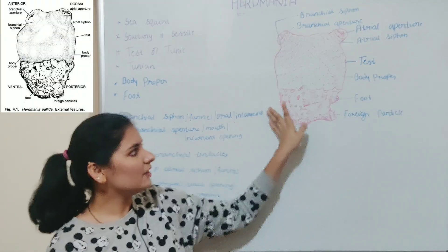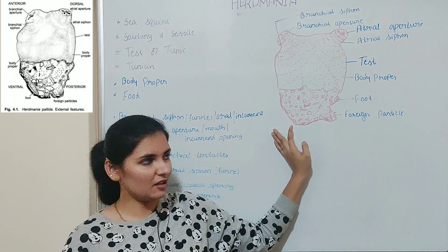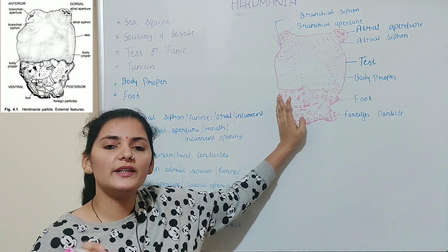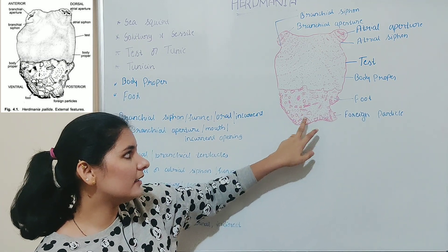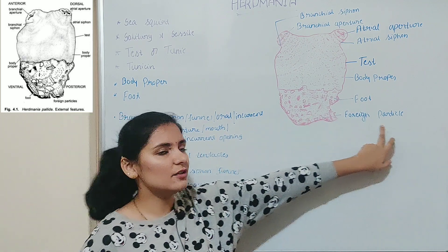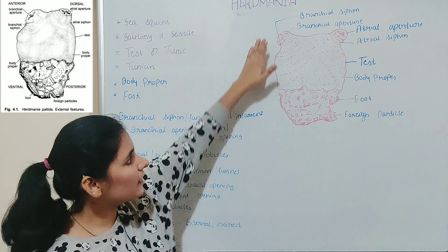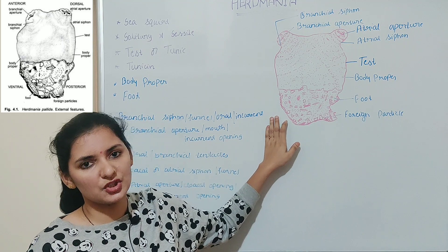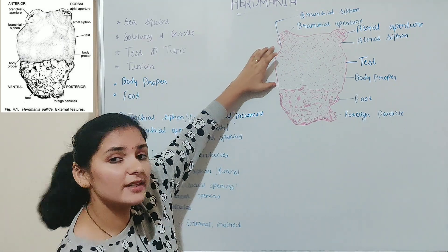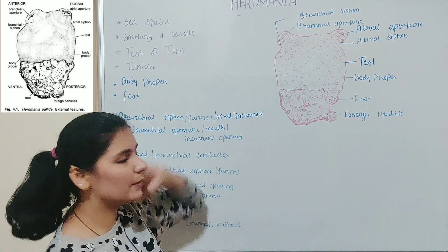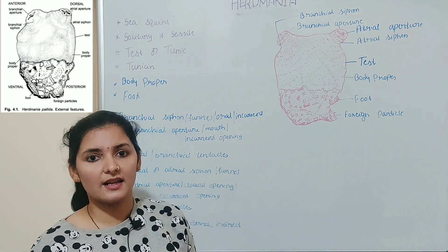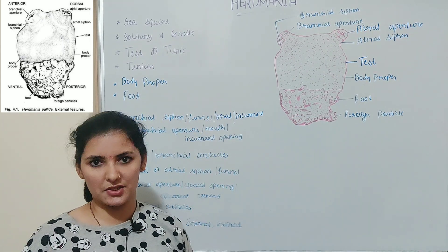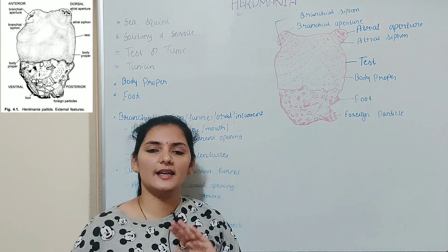The second body part is the foot, which is entirely made up of test or tunic. The foot is dirty in color and rough in appearance due to attachment of substances like sand, shell pieces, algae, and other foreign particles. With the help of this foot the animal attaches itself to the sandy surface. If the substratum is hard, like molluscan shells or rocks, the body proper itself forms a broad flat base called the basal disc, by which the organism attaches to the hard substratum, and the foot is entirely absent.